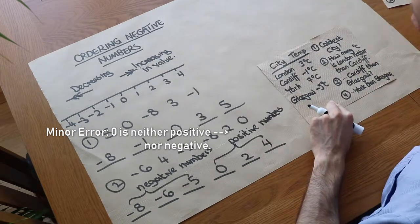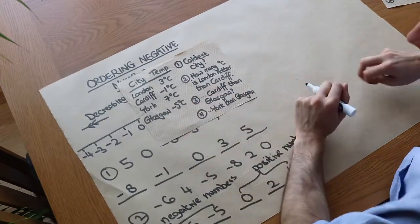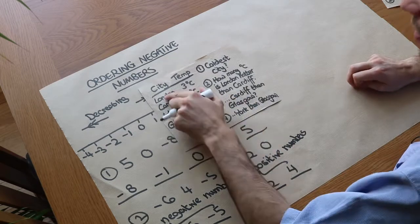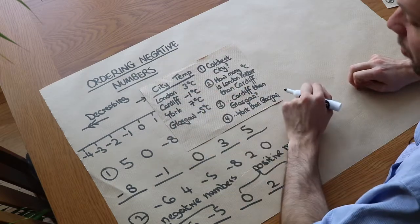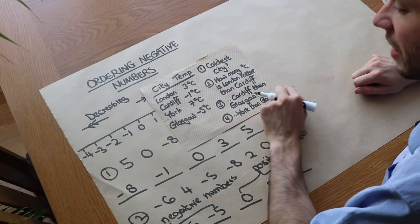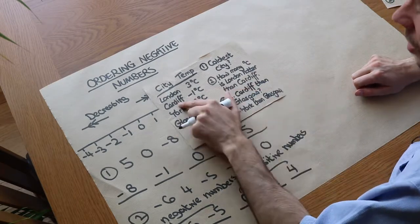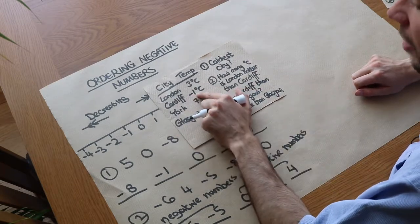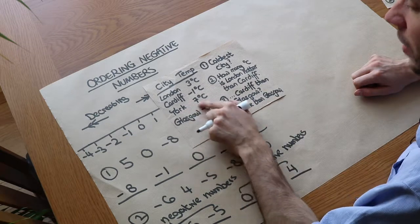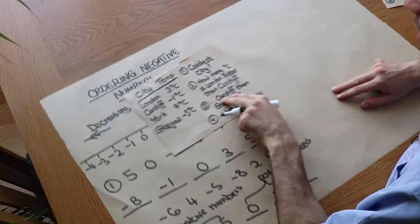Questions that come up particularly in exams involve temperatures of different cities. We've got these different cities and temperatures — it looks like the height of winter. London is currently three degrees Celsius, Cardiff is minus one Celsius, York is seven Celsius, and Glasgow is minus five Celsius.